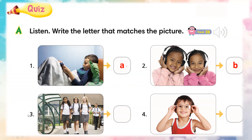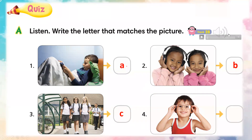Now number three — the girls walk to school. C. Exactly, C is the correct answer. Now picture number four. We listen to what they are talking in number four. The first they say he wears glasses. So A is the correct answer — that is the correct matching letter.